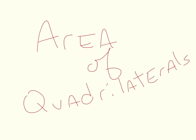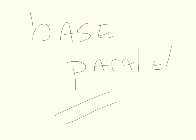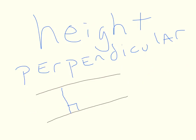Let's talk about how to find the area of all of our quadrilaterals. In order to find area, you need to find a base length and a height length. A base refers to the set of parallel sides. One of those parallel sides is the base. The height is perpendicular. It is the perpendicular distance between the two bases.